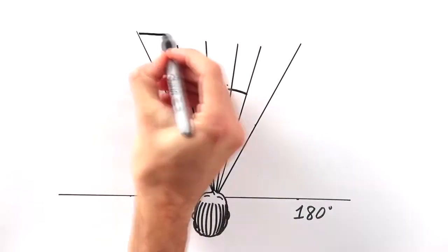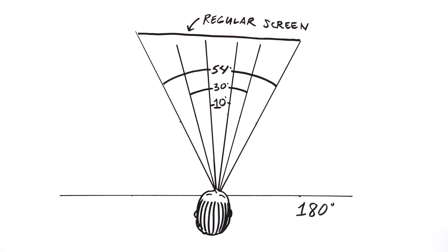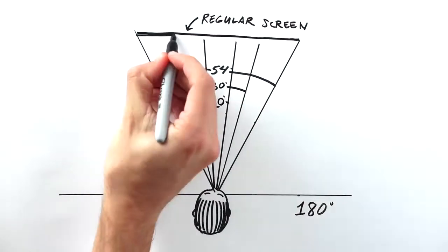A typical movie theater displays an average field of view on screen of approximately 54 degrees. That just gets you into the peripheral zone, a little on the left, a little on the right.